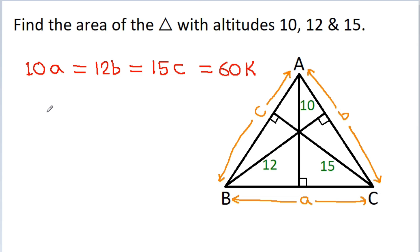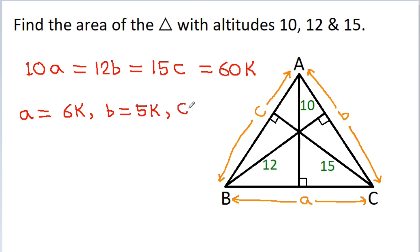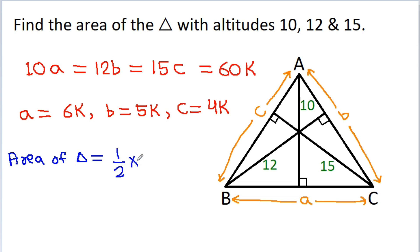From here we get A is equal to 6k, B is equal to 5k, and C is equal to 4k. Now we have to find the area of the triangle. The area of a triangle is equal to half times base times the corresponding height.